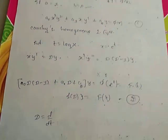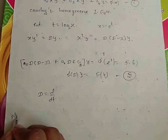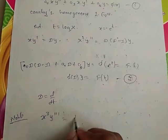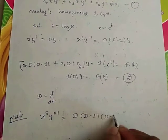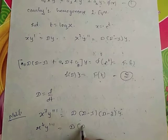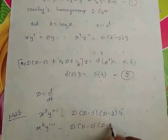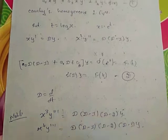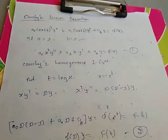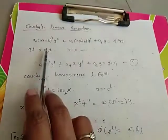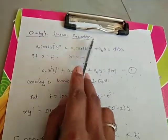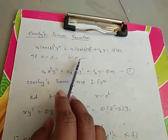Here, capital D = d/dT. For higher orders, we also consider X³·Y''' = D(D−1)(D−2)(D−3)·Y. We follow the same procedure. The Legendre's linear equation is called Cauchy's linear equation under the particular case A = 1, B = 0.